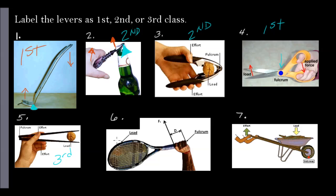Number six, the tennis racket: we have the fulcrum, we have the input force, and the output or load at the far end. Again, this is something you're swinging — any sport where you swing something is going to be a third class lever. And finally, number seven, the wheelbarrow — that should have been easy because we used it as an example. This is a second class lever.